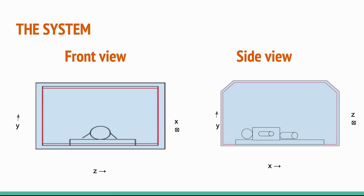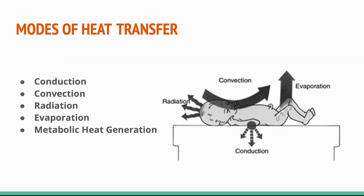This is the front and side view of the incubator. Along the length of the incubator we take the x-axis, the height is the y-axis, and the width is along the z-axis. The modes of heat transfer taking place in the incubator are conduction, convection, radiation, evaporation, and metabolic heat generation.